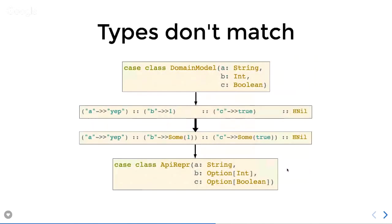What if your types don't exactly match? We've got case classes that are similar but not quite the same. This is the thing I encountered the other day that I used Shapeless for. Our domain model has an A, B, and C — String, Int, and Boolean — and they are all present, so they are not Options. But the API representation we want to expose has some of them as optional fields. So we need to turn it into an HList and then somehow work through that HList, turning fields into Options where necessary, and then convert the HList into the API representation.